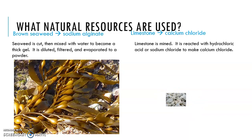Seaweed is a natural material resource — if you've ever had sushi, you can have seaweed in that. Limestone is a rock that's mined; it takes years to form but is a natural resource we extract. When we take the seaweed, we cut it, mix it with water to make a gel, then dilute it, filter it, and evaporate it to make a powder. Seaweed isn't naturally found as a powder, but we turn it into one to make gummy worms.